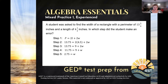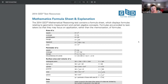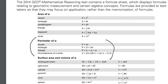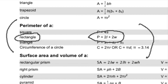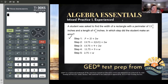First things first, for the first step, our student wrote down a formula. Did he choose the correct formula? He's been asked to find the width of a rectangle and he knows the perimeter, so he needs the perimeter of a rectangle formula. Here is the GED formula sheet — you can see the second section down is the perimeter section, and there's a rectangle. Indeed, that is the formula P equals 2L plus 2W. Step one looks good — the student chose the correct formula.